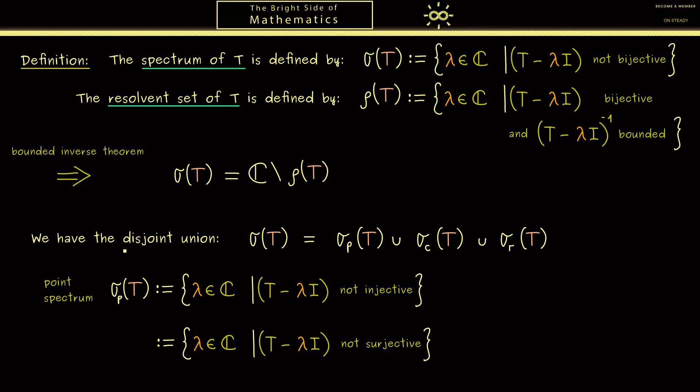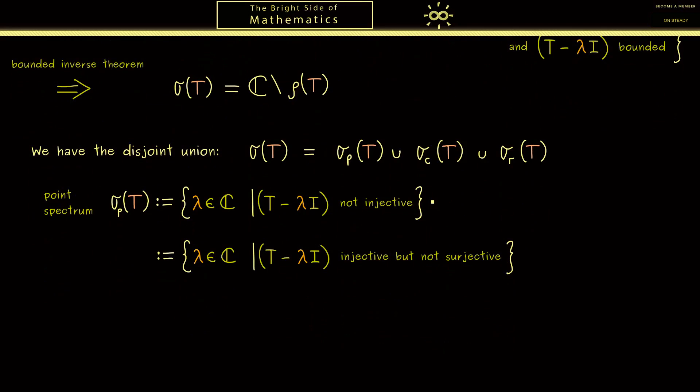Okay, now you should see to get a disjoint union we also have to include the injectivity here. So in this sense we could actually do it, but it turns out we can distinguish the points even more. Now not surjective simply means that the range of the operator is not the whole space X.